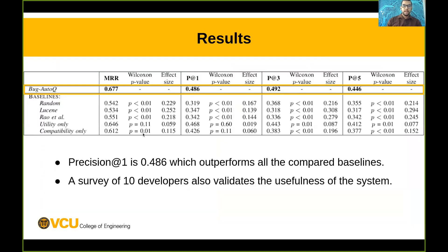We compare our model against several baselines: random baselines, lexical baselines, an approach by Rao et al., and two ablation baselines. We compare against several metrics such as MRR, precision at rank 1, precision at rank 3, and precision at rank 5. Our model outperforms all the baselines. We highlight precision at rank 1, which is 0.486. This means that the model's selected follow-up question ranked first is correct almost 50% of the time.